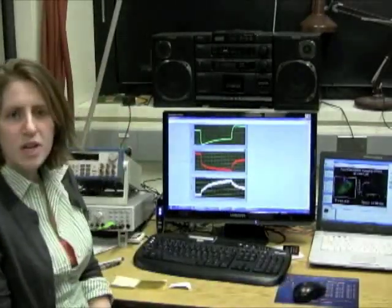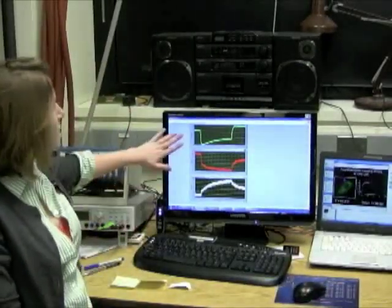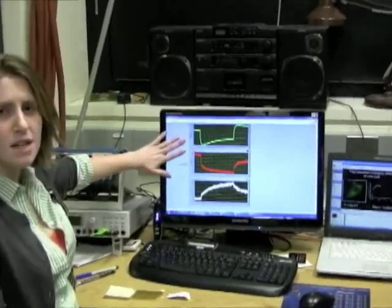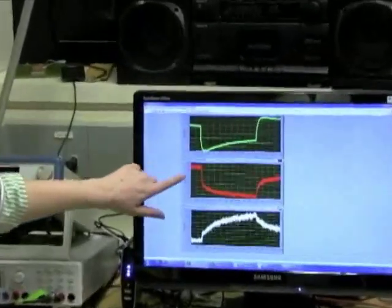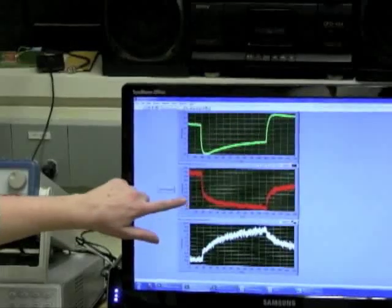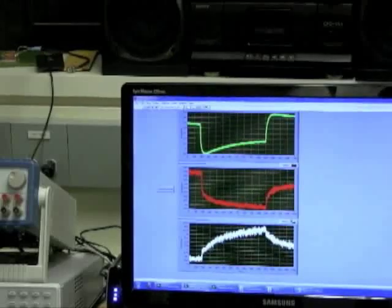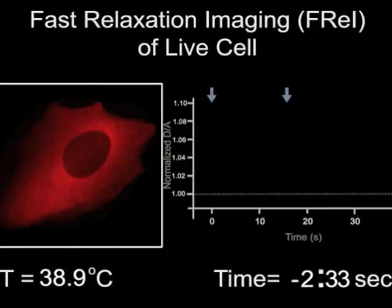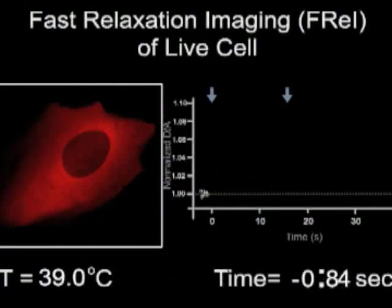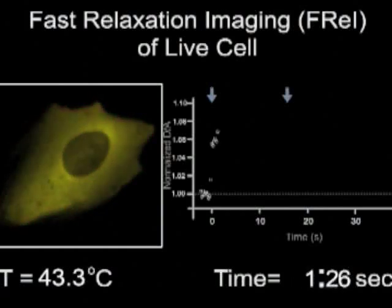As an example, we can look at this data. You can see here that the green intensity is rising during the temperature jump while the red intensity is falling. This shows that the distance between the two labels is increasing and that the protein is unfolding in the cell. This video shows this process in real time. The cell gets greener as the temperature jump progresses, meaning that the ends of the protein are getting further apart and that the protein is unfolding.